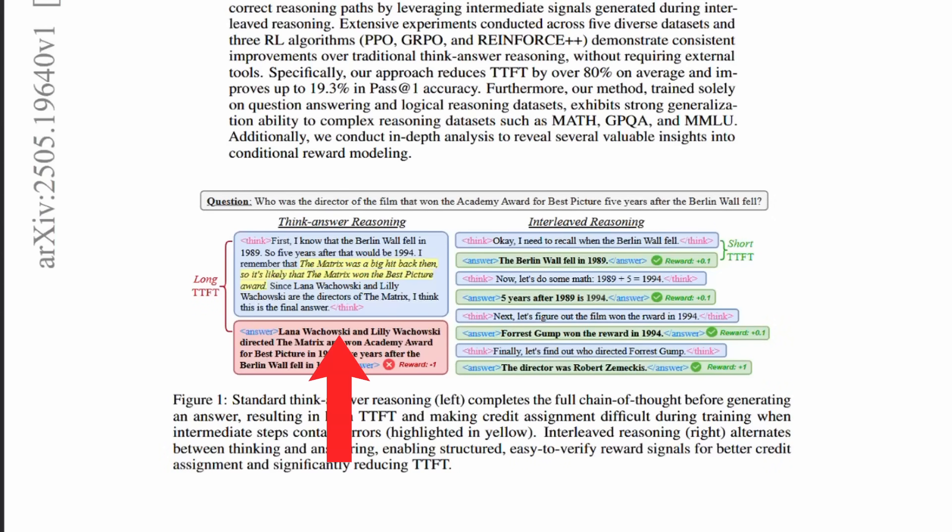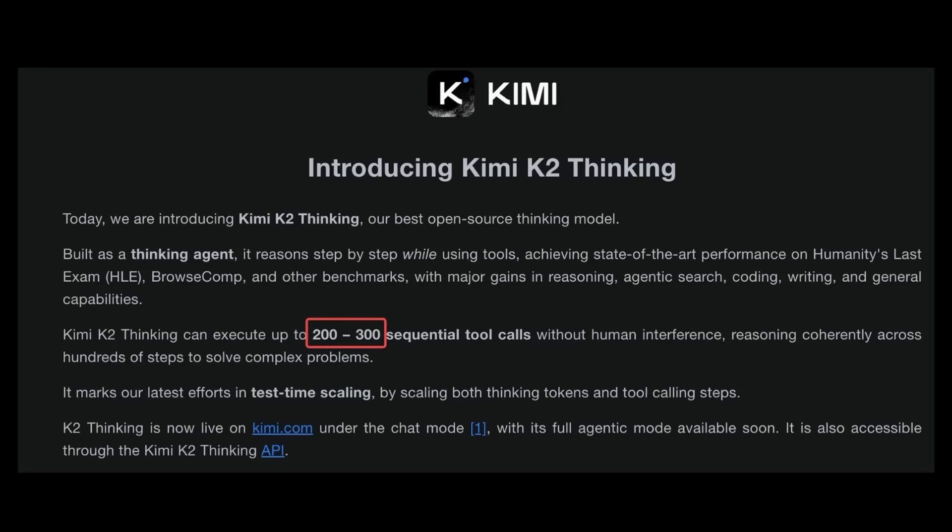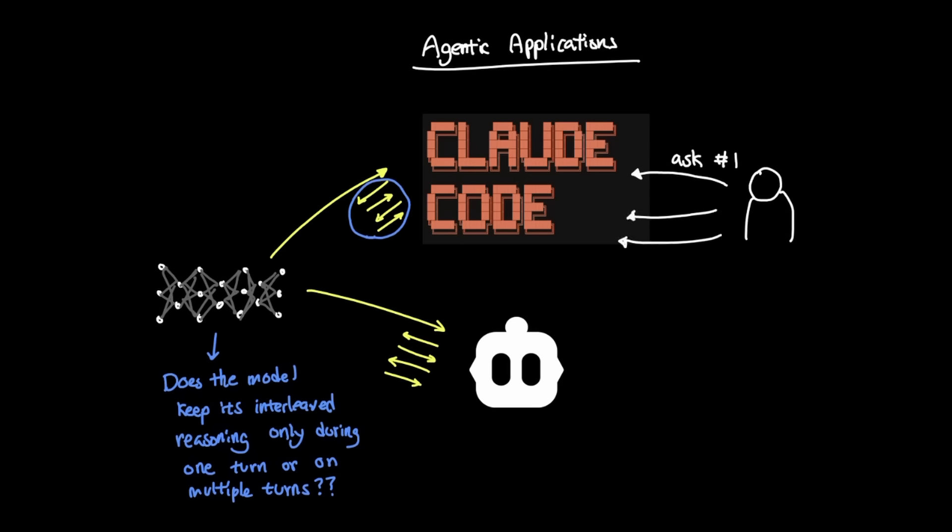Now this certainly isn't to dismiss traditional reasoning model as an inferior method because traditional reasoning was and is still part of the backbone of most reasoning models that we have now. But as agentic use cases of large language models have become more mainstream, interleaved reasoning really started to show its promise in its usefulness in agentic applications like Clotcode or Klein to perform tasks that typically contain series of tool calls. And Kimi K2 Thinking supports up to 200 to 300 sequential tool calls and leverages interleaved reasoning for long-running tasks. One common misconception about interleaved reasoning is this: Does the model keep its interleaved reasoning only during one turn or on multiple turns? In other words, if I ask the model to perform one task, does interleaved reasoning mean that these reasoning traces are kept for the entirety of the agentic conversation or just that one interaction alone?